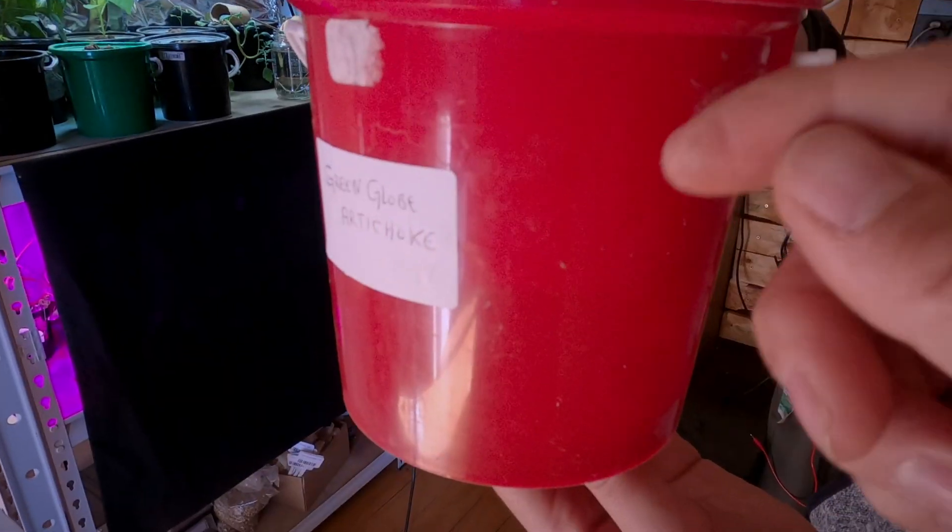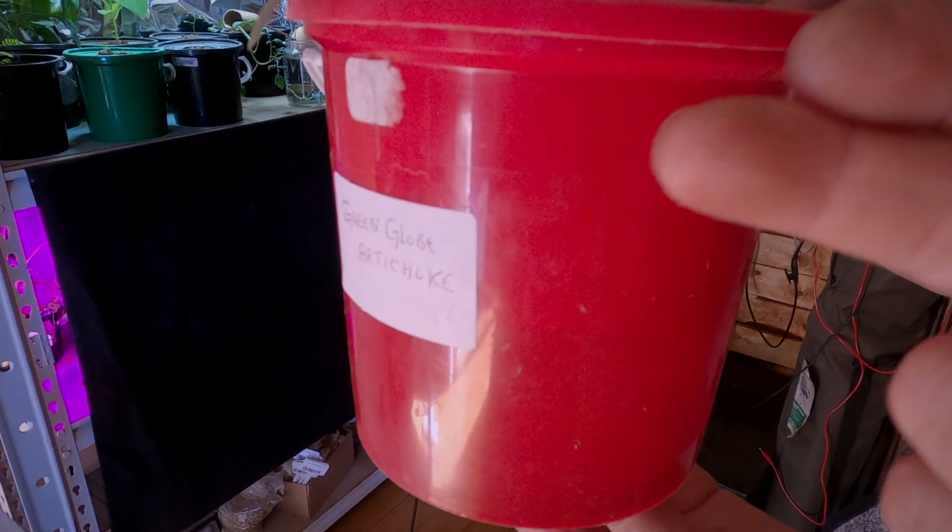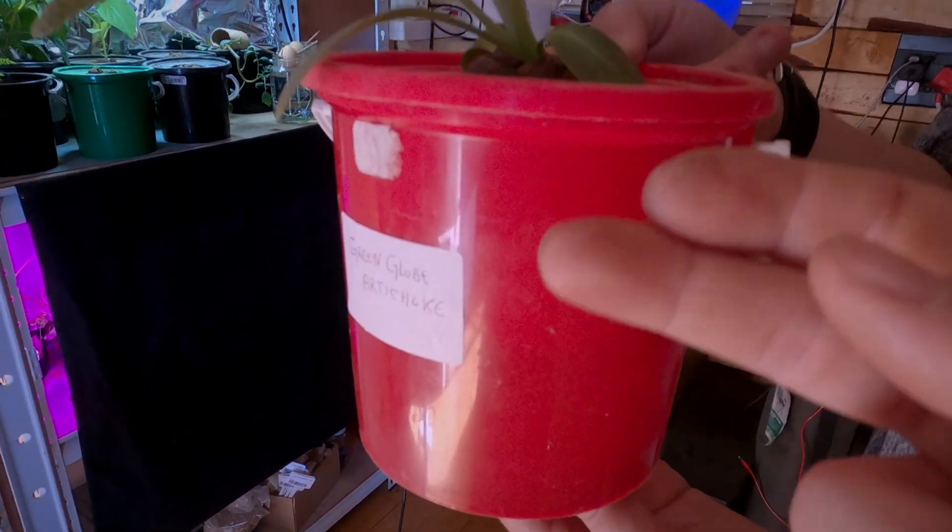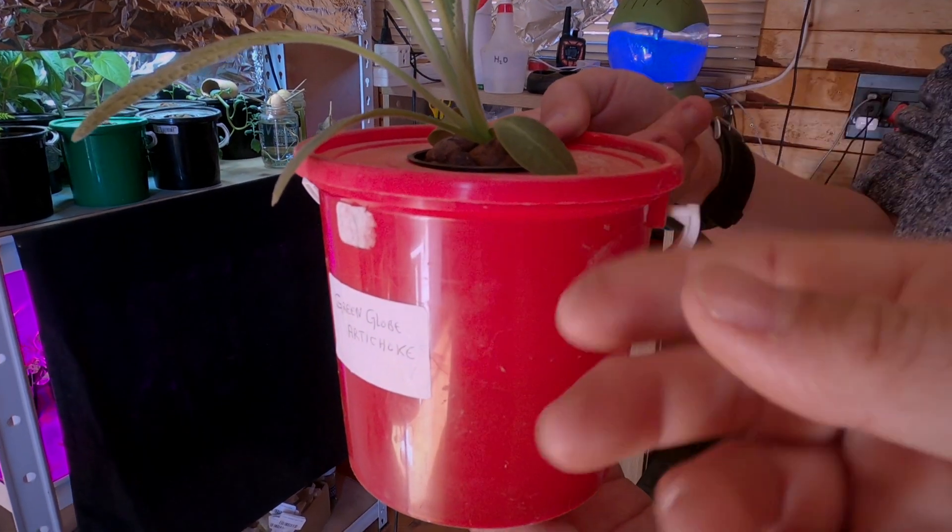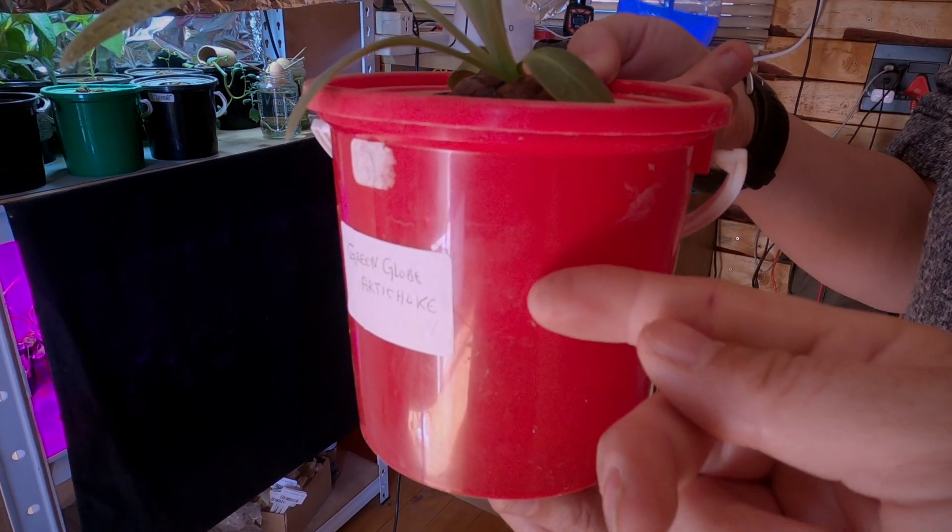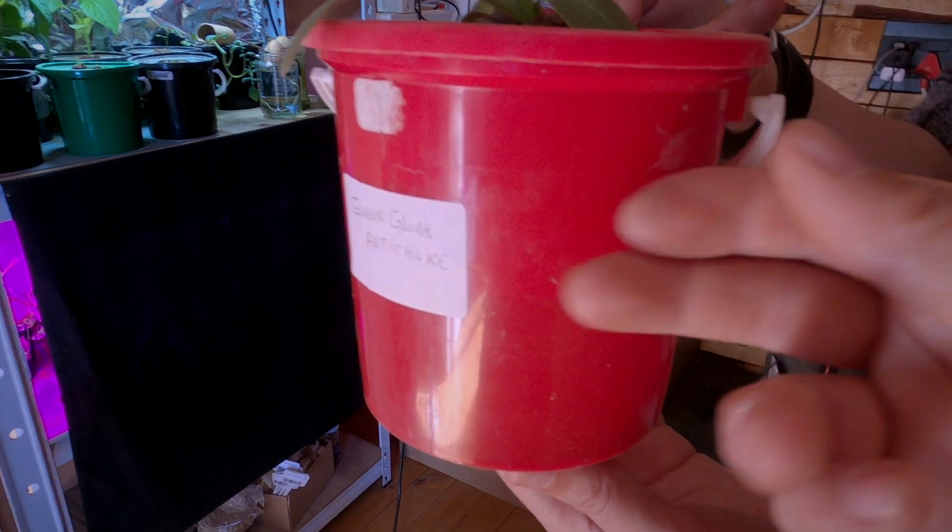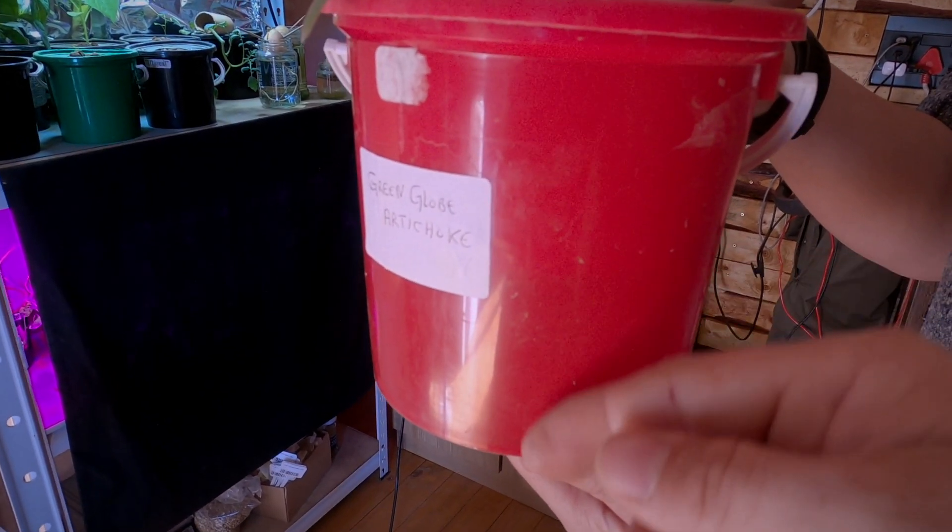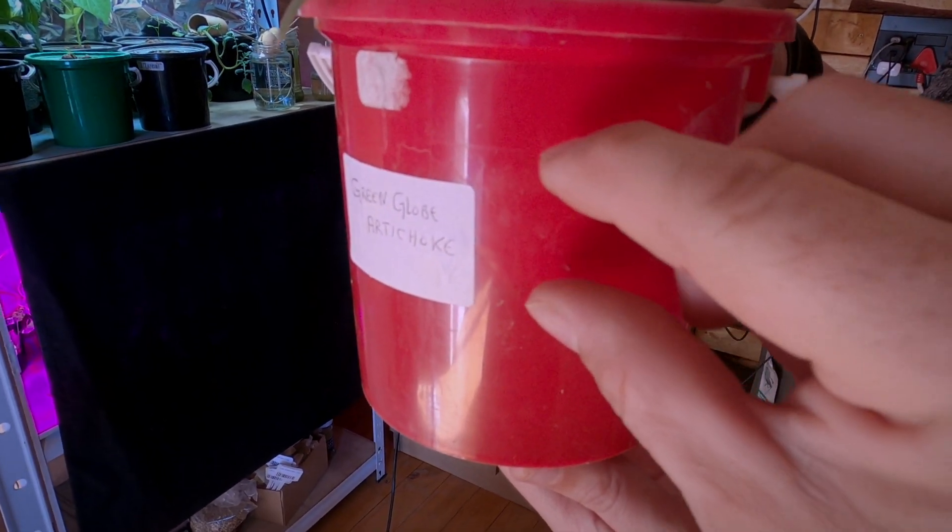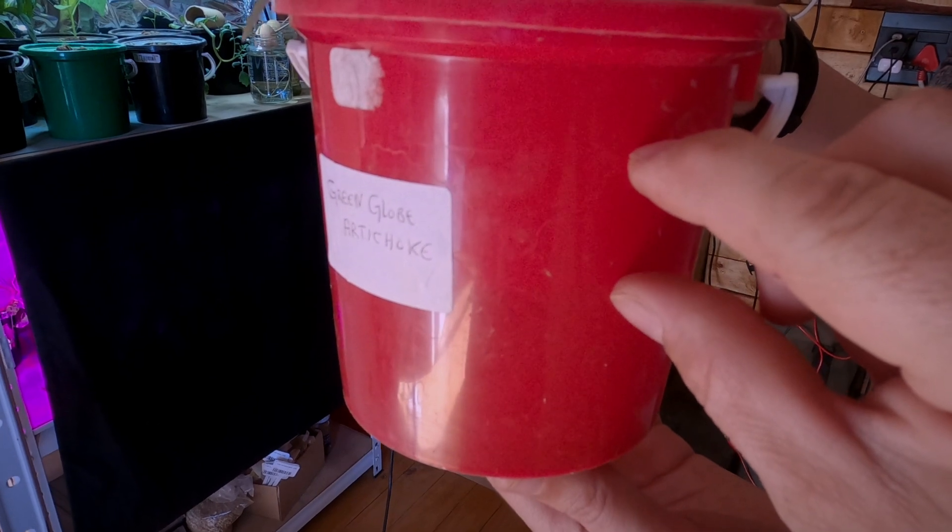The roots are there, then you fill this with your nutrient solution to the point where it just touches the roots. Then as your roots grow, the transpiration through the leaves uses up your liquids, it drops, the roots chase the water level, the roots go down. That exposes them to both nutrient liquid at the bottom and a layer of air which aerates them, prevents root rot.